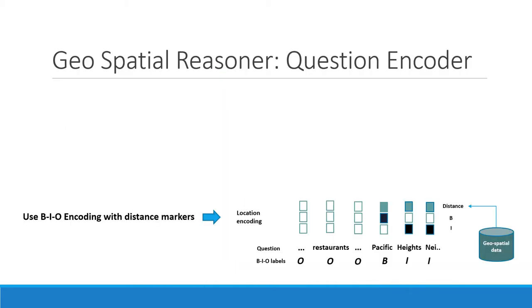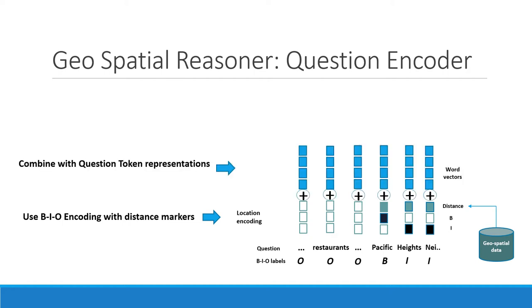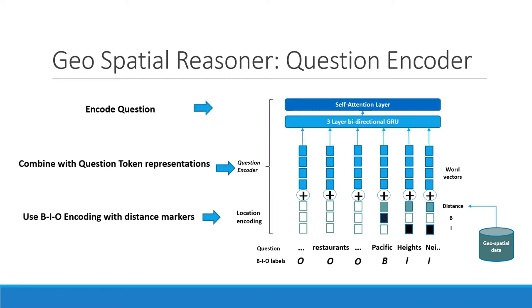We first tag each question with a named entity recognizer and then label any location mentions in BIO encoding. Then, given any candidate entity under consideration as an answer, we calculate the distance of that candidate entity from each location mentioned and encode them as shown on screen. For a given location such as the Pacific Heights neighborhood, the distance of that candidate entity is encoded in the green box, and the other two dimensions encode the BIO encoding. We combine these location encodings with word vector representations of each token and feed them into a three-layer bidirectional GRU, which is self-attended to generate a question embedding.